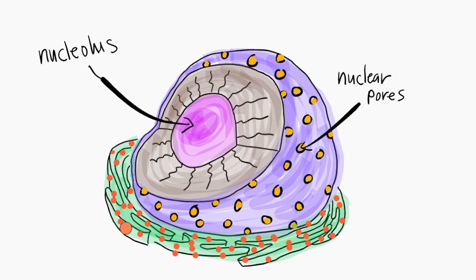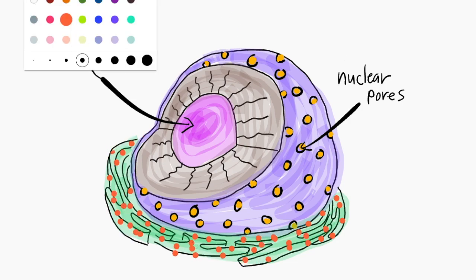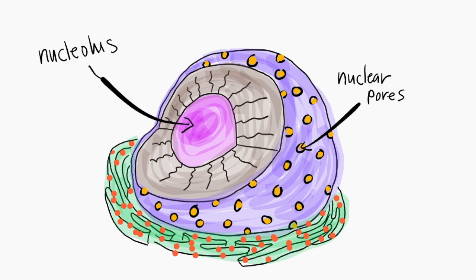The endoplasmic reticulum, also known as the ER, consists of a rough ER which has ribosomes attached to it. Proteins produced by these ribosomes flow into the center of the ER. Some become transport proteins on the cell membrane, and some are packaged up and sent to the Golgi apparatus for exiting the cell.